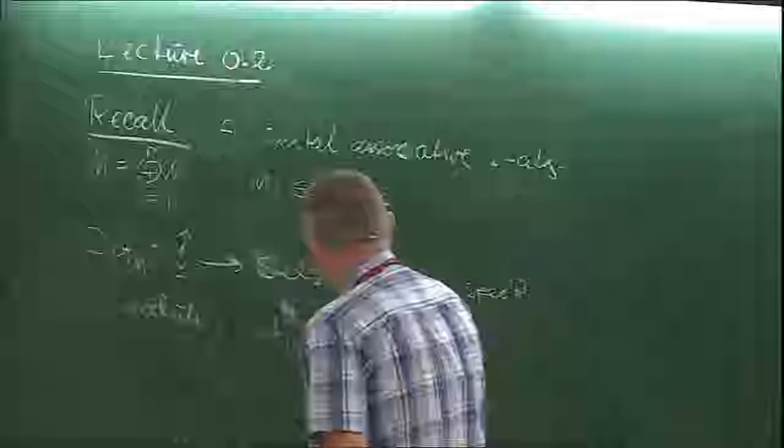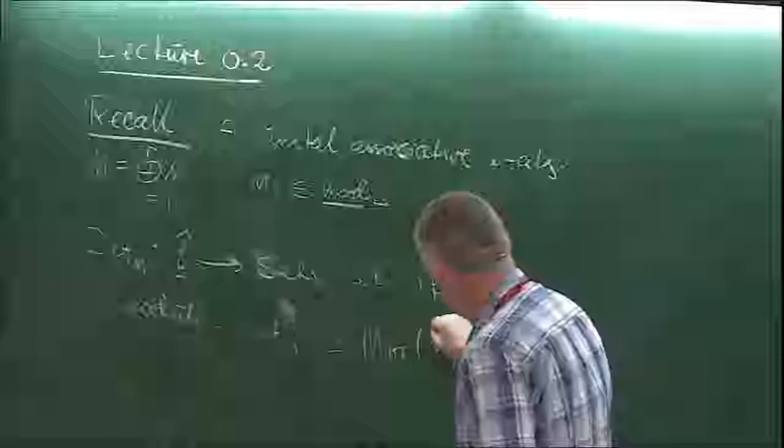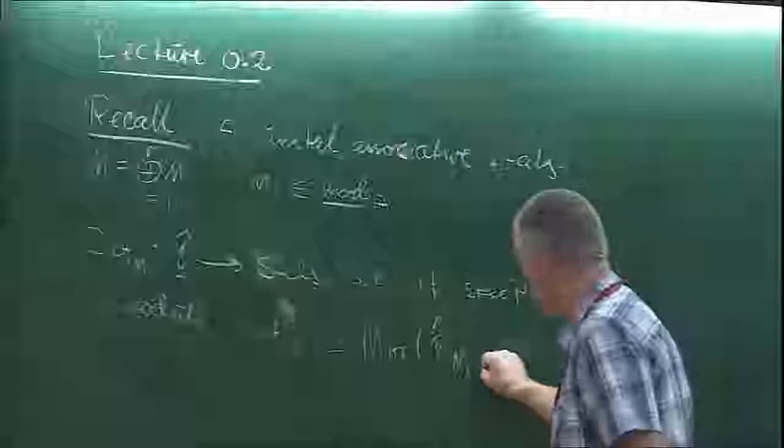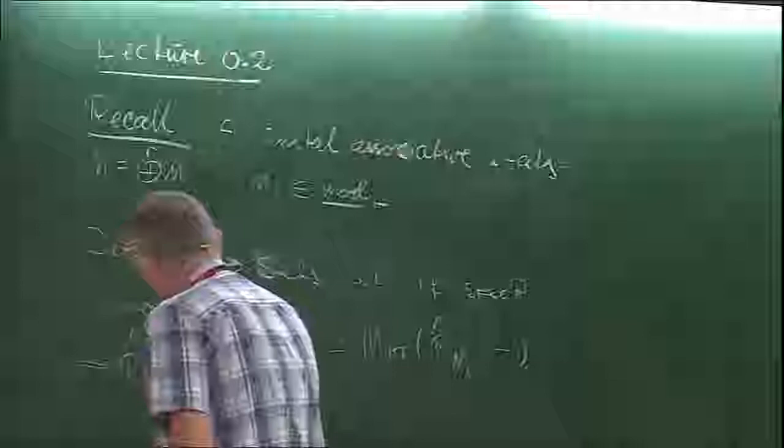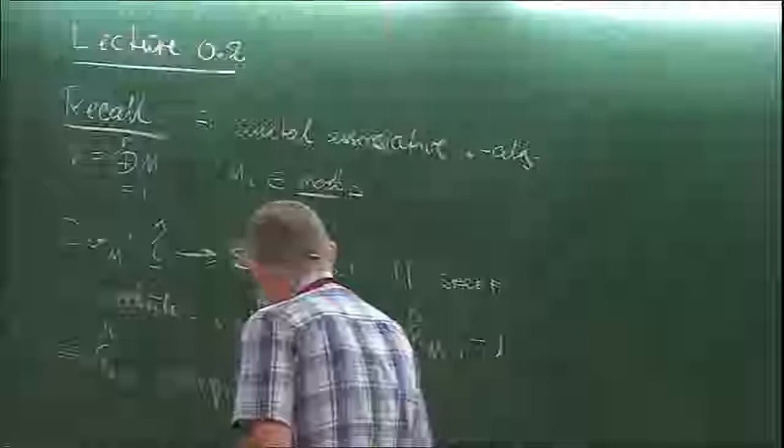This is then isomorphic to morphisms from R localized to M and completed — so this is an object of L-hat — and that is the same as saying that R_M-hat pro-represents def_M as R-modules.